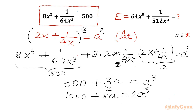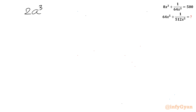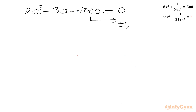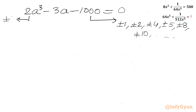We can write 2a³ - 3a - 1000 = 0. Now I will use the rational root theorem and synthetic division method to solve this cubic equation. The eligible factors of the constant 1000 include ±1, ±2, ±4, ±5, ±8, ±10, and so on. For the leading coefficient, we have ±1 and ±2. Plugging in a = 1, 2, 4, or 5 won't work because of the -1000 term, so let me try a = 8 directly.